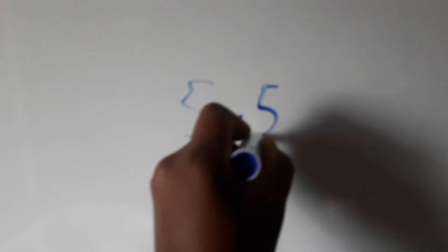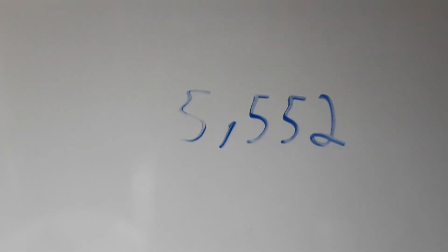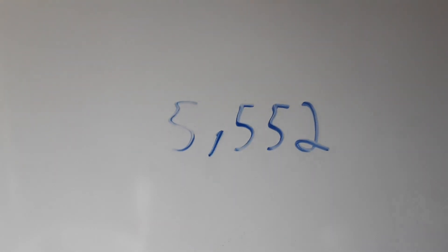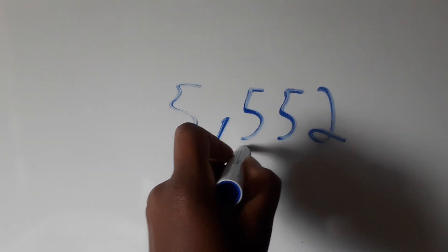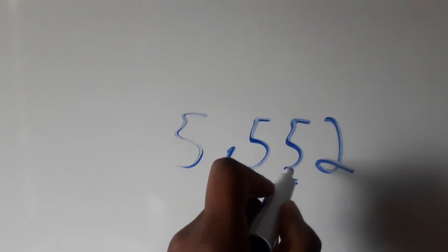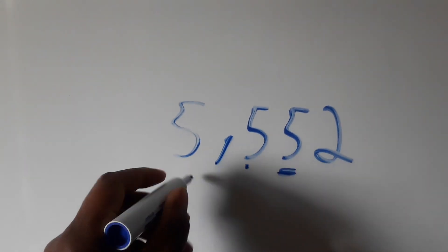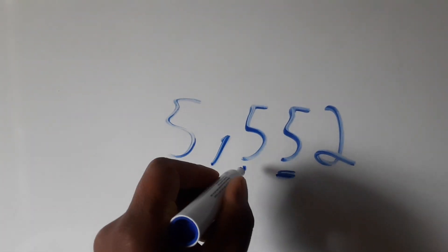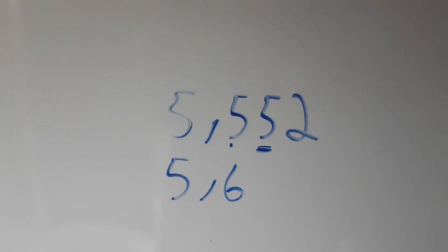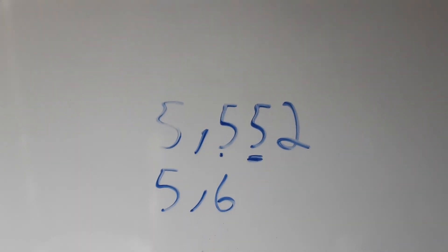Let me do another example. We have the number 5.552. We need to round off to one decimal place, so we must have one number after the decimal. We look at the second digit — is it greater than four? Yes, it's five, so we change this digit. The answer is 5.6.